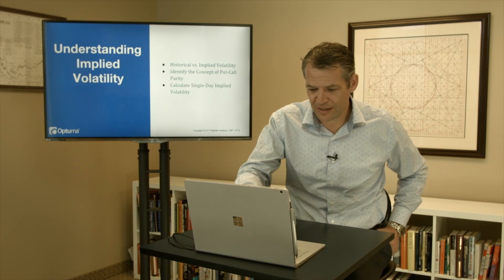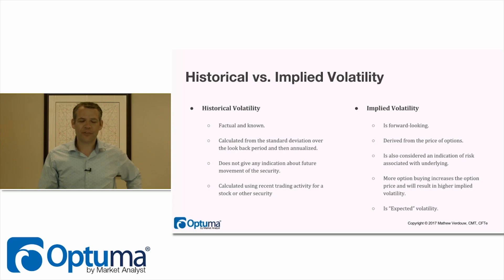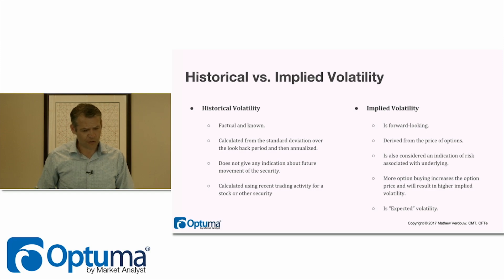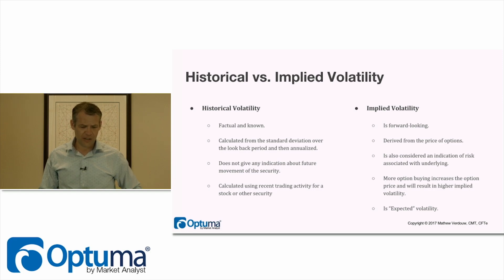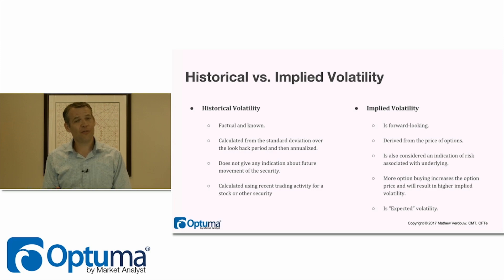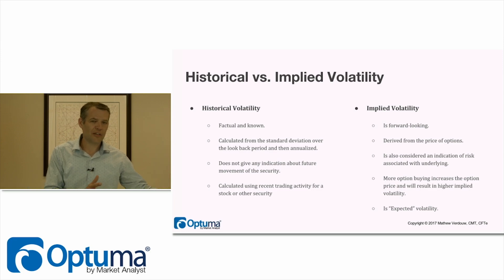So let's jump in. When we're talking about risk, there are two types of metrics that we use in technical analysis. The first is historical volatility and the second is implied volatility. The thing about historical volatility is it's factual — it's looking back and saying this is the volatility based on the last 10, 20, 30 days of data.